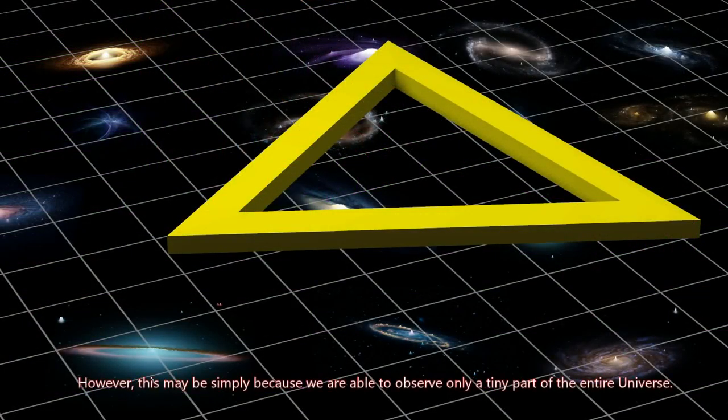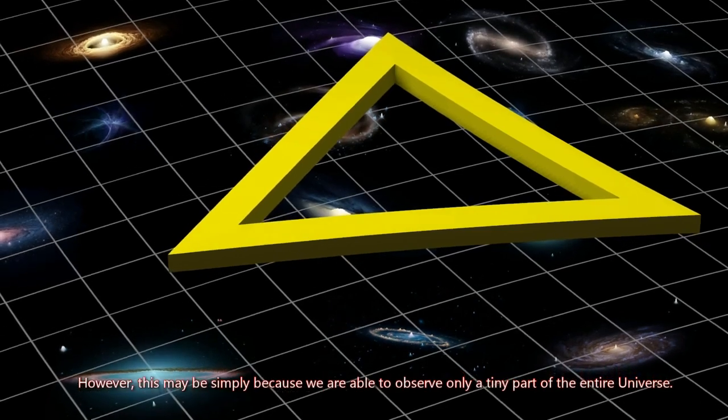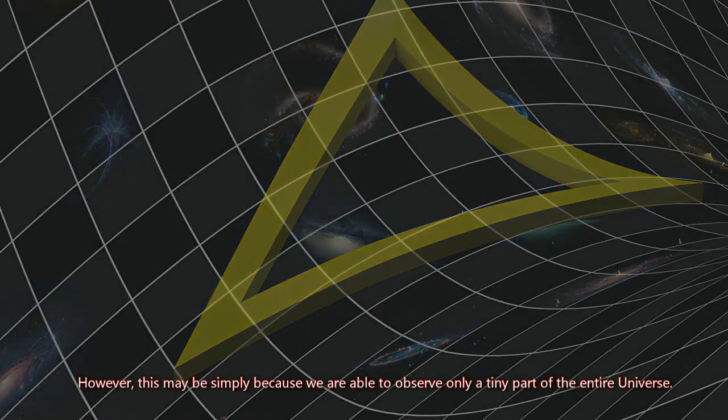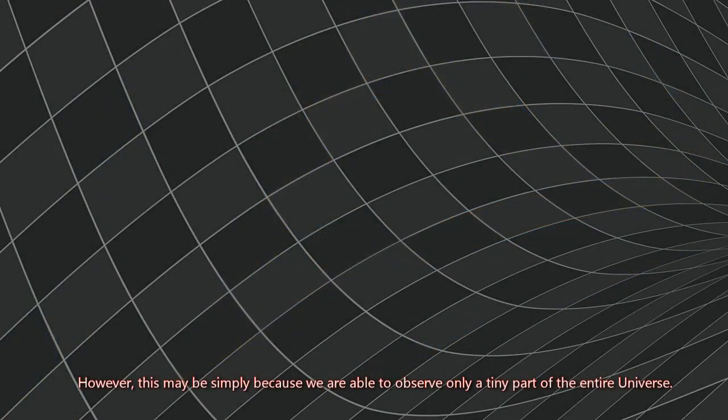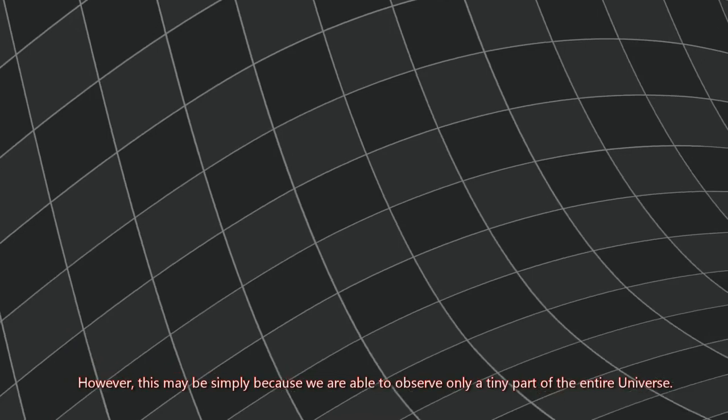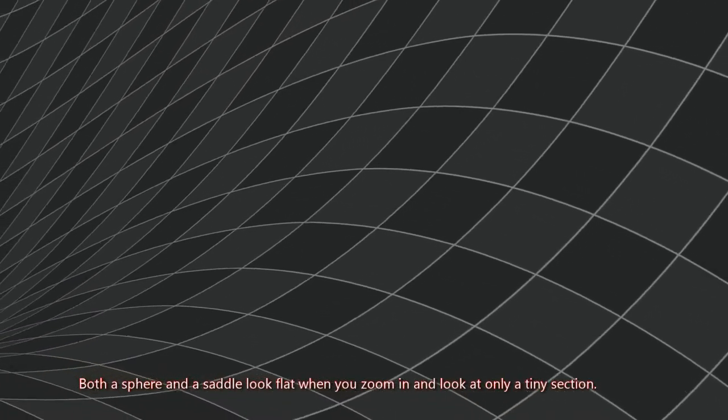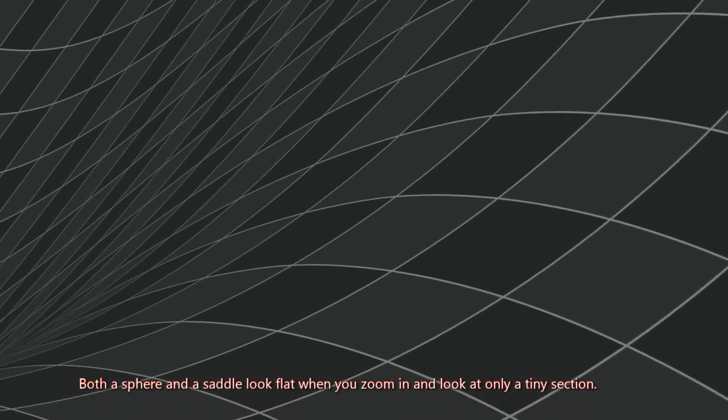However, this may be simply because we are able to observe only a tiny part of the entire universe. Both a sphere and a saddle look flat when you zoom in and look at only a tiny section.